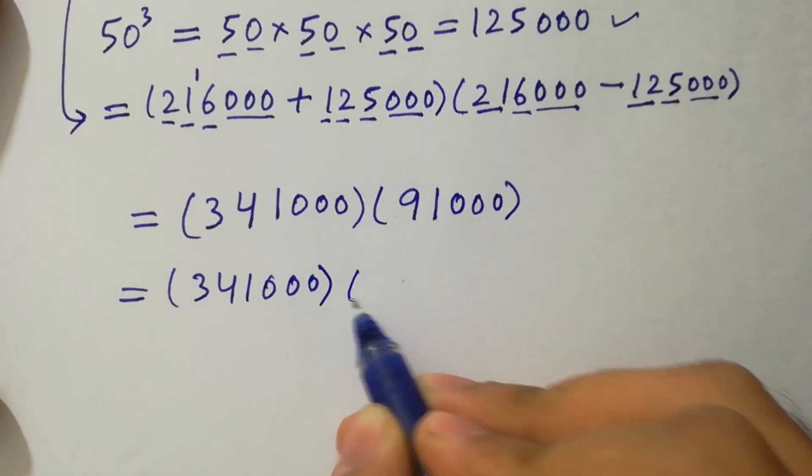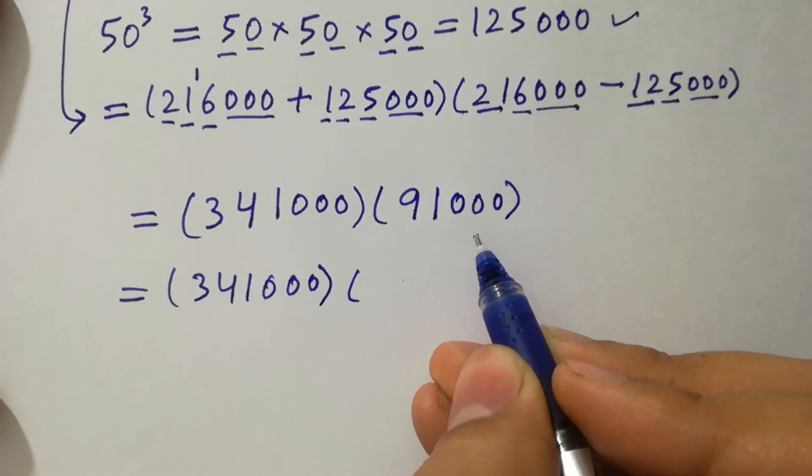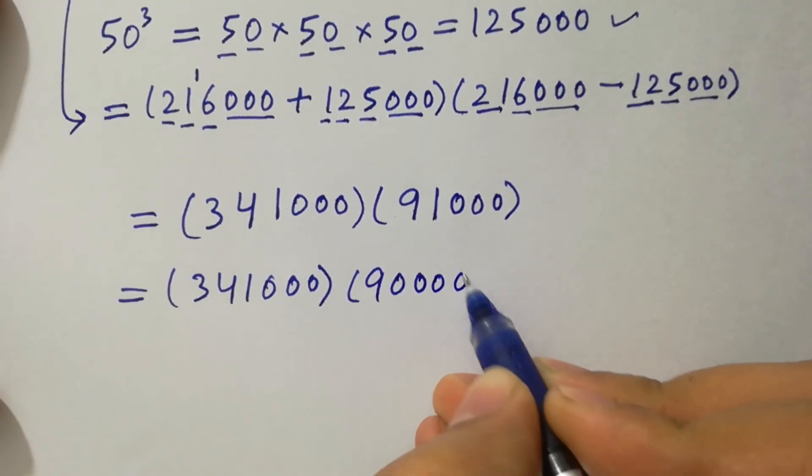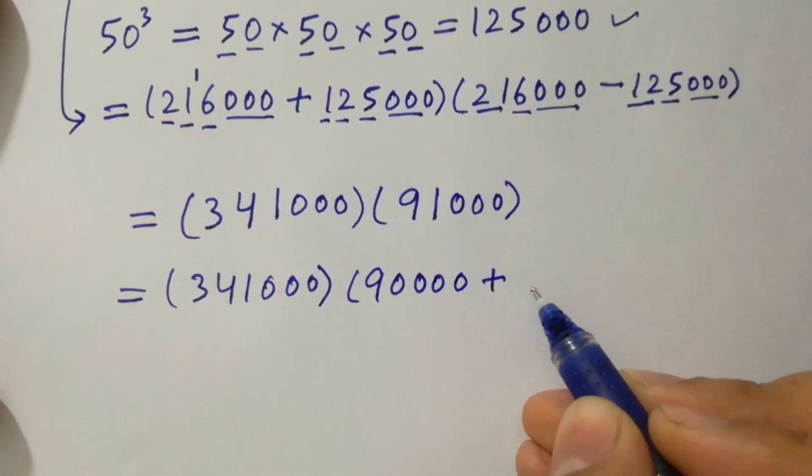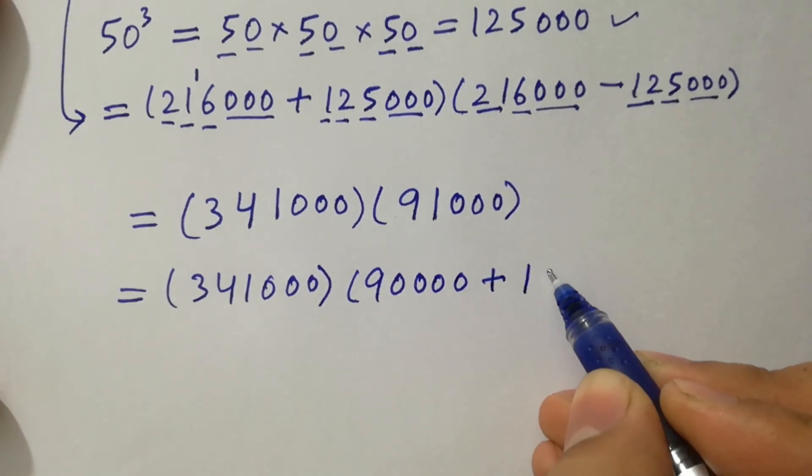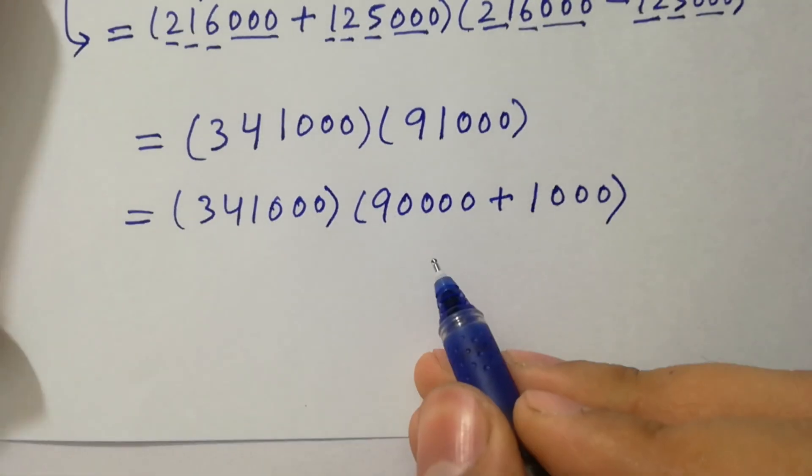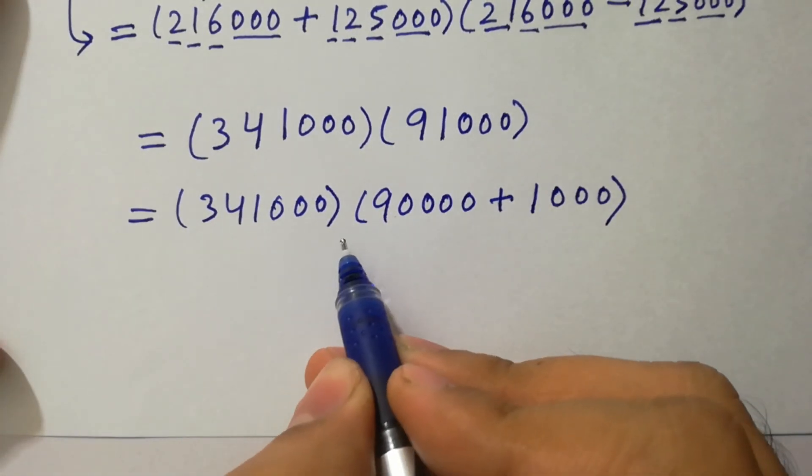Here we have 91,000 is the same as 90,000 plus 1,000 as it is. In the next step, I am going to multiply them.